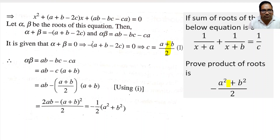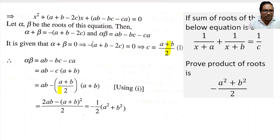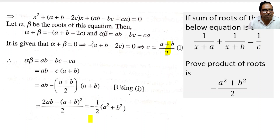Now alpha·beta, the product of roots, equals ab − bc − ca = ab − c(a + b). Substituting c = (a+b)/2, we get ab − (a+b)/2 · (a+b) = ab − (a+b)²/2. Expanding: 2ab − (a² + b² + 2ab), all over 2. The 2ab cancels, leaving us with −(a² + b²)/2. We just eliminated c and expressed everything in terms of a and b.